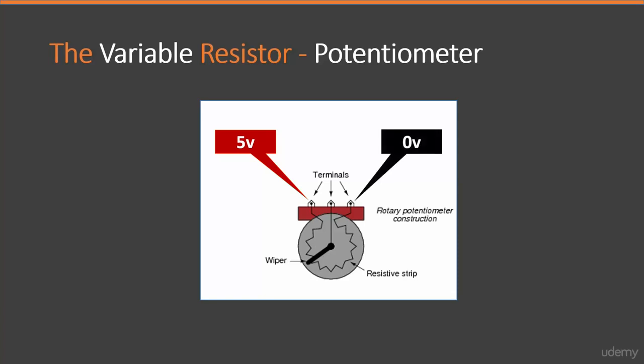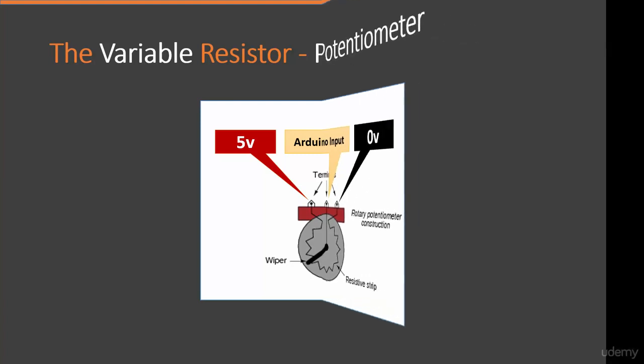The other side will be connected to ground, zero volts, to provide a reference voltage. The last one — the middle terminal — will be connected to the Arduino analog input pin. Let's see how it is connected in the project circuit design.